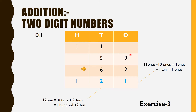Here you can see 9 plus 2, the answer will be 11 ones, but we cannot write 11 at the ones place. So we have to regroup this 11 ones. Now, 11 ones are regrouped as 10 ones plus 1 one. Now 10 ones can also be written as 1 ten plus 1. We will carry over this 1 ten to the tens place. I have carried forward 1 ten over here. Now we will add all the tens values together — that means 1 plus 5 plus 6. The answer will be 12.